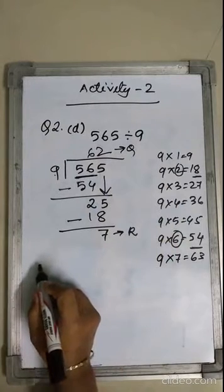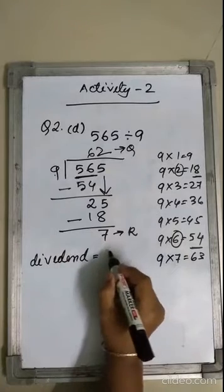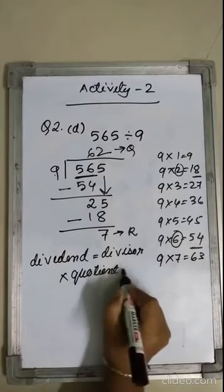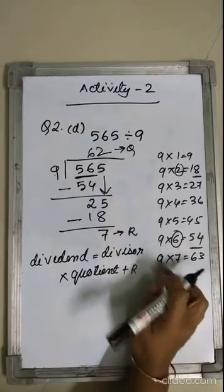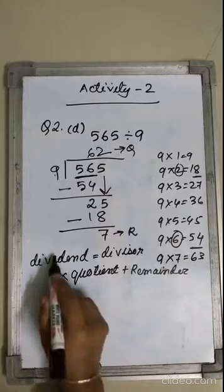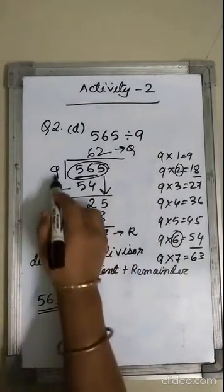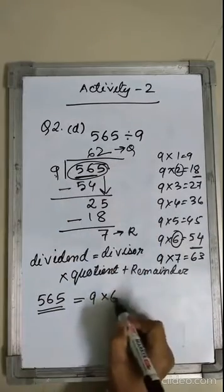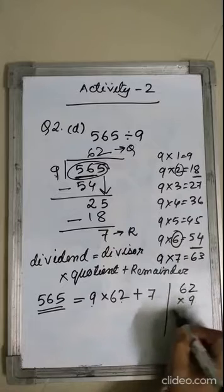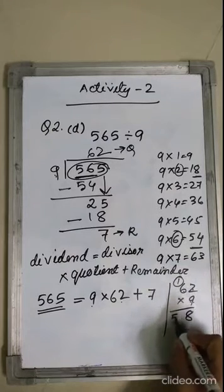According to the division algorithm, dividend equals divisor into quotient plus remainder. Dividend is 565. 565 equals divisor 9, multiplied by quotient 62, plus remainder 7. So: 9 into 62 — 9 into 2 is 18, carry 1; 9 into 6 is 54 plus 1 equals 55.